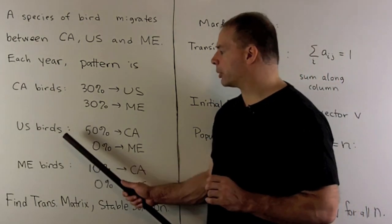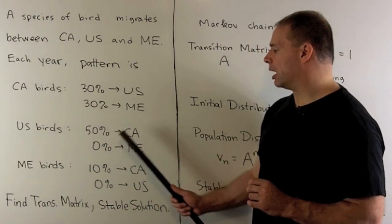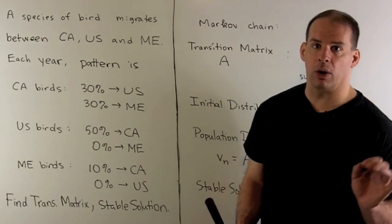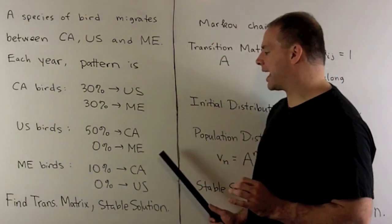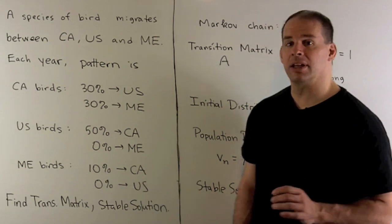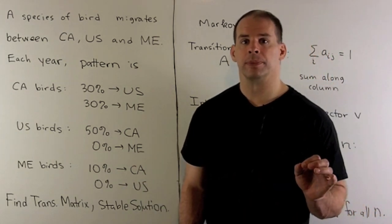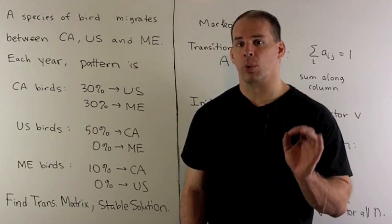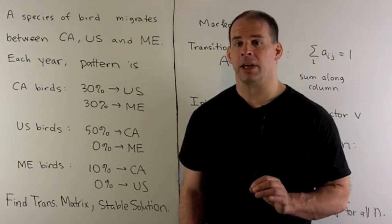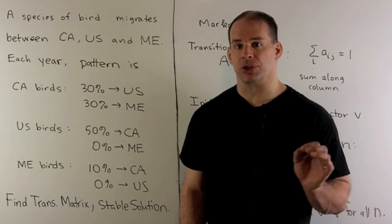For the US birds, 50% go to Canada, none go to Mexico, the rest stay home. For the Mexican birds, 10% go to Canada, none go to the US, and the rest stay home. We want to find the transition matrix for the Markov chain, and we want to find a stable solution.